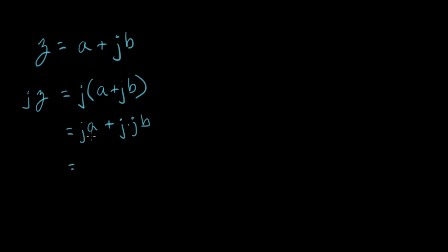a and b have now switched places. So we're going to put ja on this side, ja on this side, and what do we have here? j times j is minus one, so we have minus b plus ja.